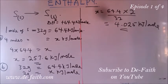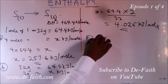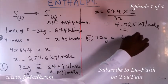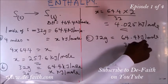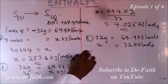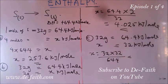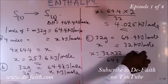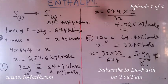For part (c), we determine the mass of sulfur that requires 32 kJ of heat for fusion. Using 32 grams equal to 64.4 kJ per mole, if 32 kJ per mole is supplied, we cross-multiply: x equals 32 × 32 divided by 64.4, and that gives 15.9 grams of sulfur.